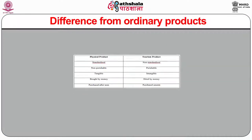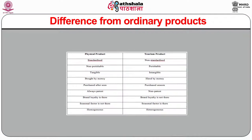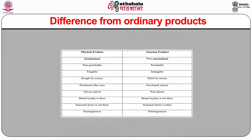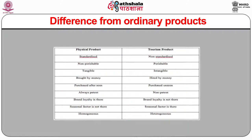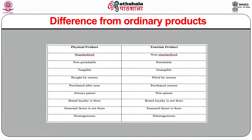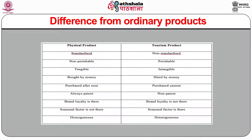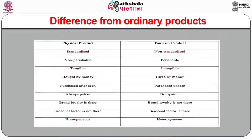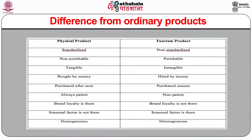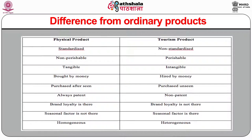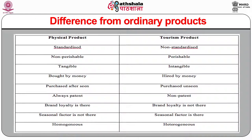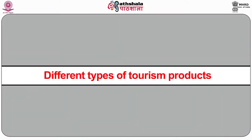Tourism product is different from an ordinary product. Physical product is standardized, non-perishable, tangible, bought by money, purchased after being seen, always patent, has brand loyalty, seasonal factor is not there, and is homogeneous. Whereas tourism product is non-standardized, perishable, intangible, hired by money, purchased unseen, non-patent, brand loyalty is not there, seasonal factor is there, and is heterogeneous.